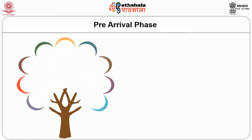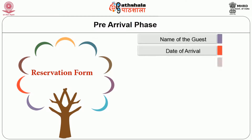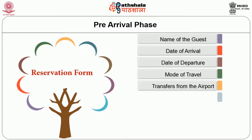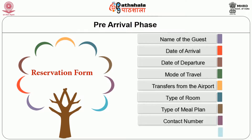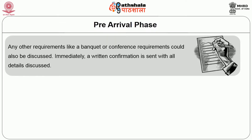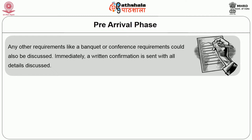All necessary details are recorded in the reservation form by the reservation staff, including the name of the guest, date of arrival, date of departure, mode of travel, whether they need airport transfer, type of room required, type of meal plan, number of guests, contact number, email, fax, and payment details. Guests may settle bills by cash or credit card. Additional requirements such as banquet or conference arrangements are also discussed and recorded during reservations.